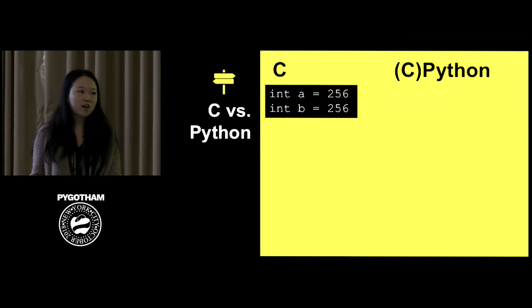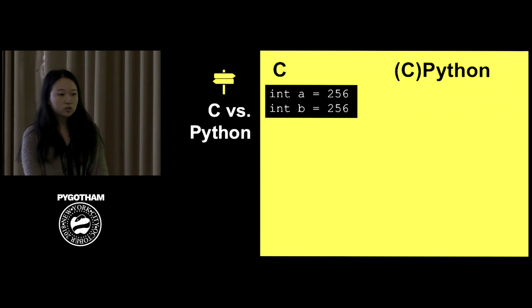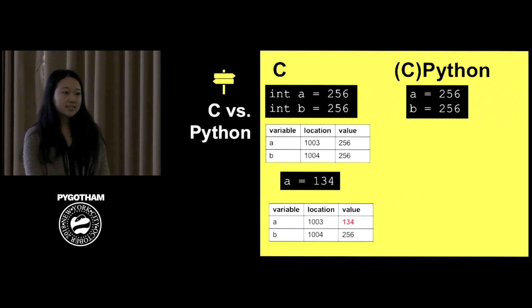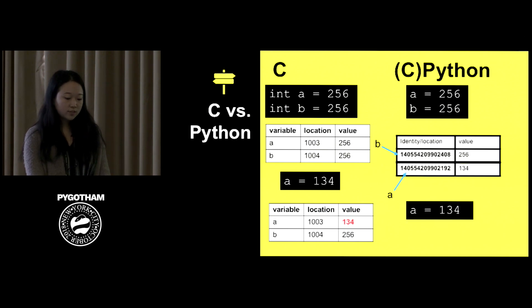Like for instance C, which CPython is built on, if I create two variables with the same value like a and b to 256, they're going to live in two different memory locations. If I reassign one of the variables to a different value like a to 134, the location does not change, just the value will. However, if I did the same thing in Python, you can see that you'll have two pointers to the same memory location. And if I did the same thing again and I reassign a to 134, we lose one of the references to the location that had 256 and now there's a reference to a different location.